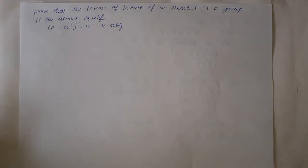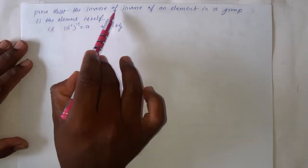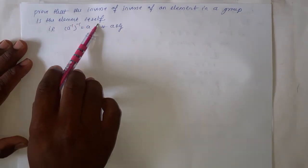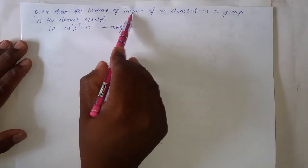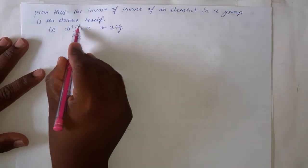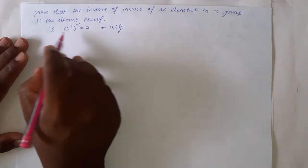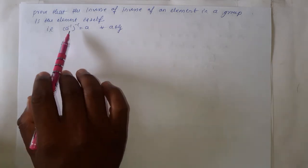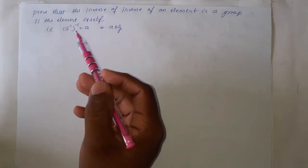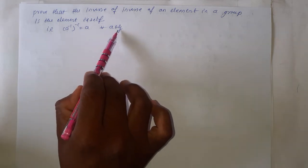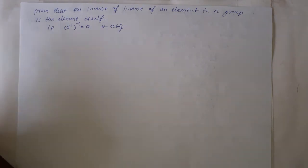The next theorem is: prove that the inverse of the inverse of an element in a group is the element itself. Symbolically, the inverse of A inverse is equal to A itself. This is true for each and every element of the group G — for example, B inverse whole inverse equals B.